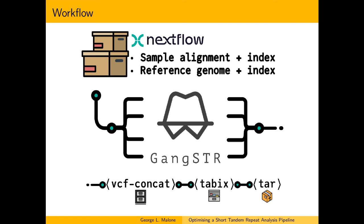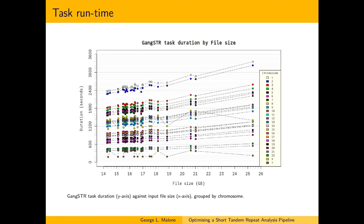Shown here is a diagram of the per-sample workflow within the NextFlow pipeline. GangSTR tasks run in parallel for all combinations of sample and chromosome, including for multiple samples simultaneously. Within each sample, the results per chromosome are concatenated and indexed, then the two files are bundled together. GangSTR tasks were dependent only on input file size and on chromosome. Downstream tasks and memory usage were non-zero but were not dependent on any measured factor. Memory usage was not a concern, as it was far below the minimum available memory per core.